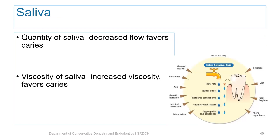Plaque pH and salivary buffering capacity are very important determinants of dental caries. The quantity and flow of saliva is also important — good salivary flow keeps replenishing calcium and phosphate on the tooth surface. A good buffering effect of saliva will not allow plaque pH to remain below 5.5 for a long time — these are protective properties of saliva. Regarding viscosity, thick and ropey saliva favors caries, whereas thin serous saliva favors remineralization and helps in prevention of caries.